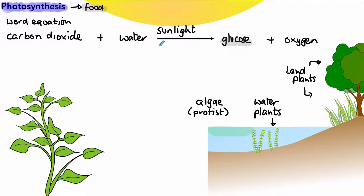Sunlight needs to be captured and absorbed, and that's done by a chemical called chlorophyll, which is found in chloroplasts. Chloroplasts are present in high numbers in leaves.